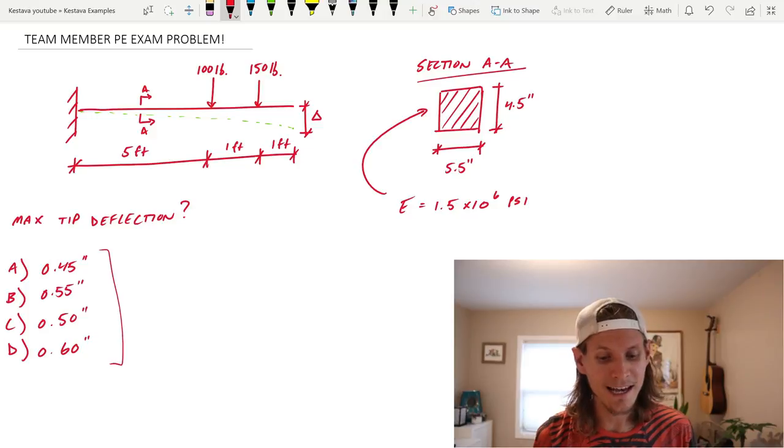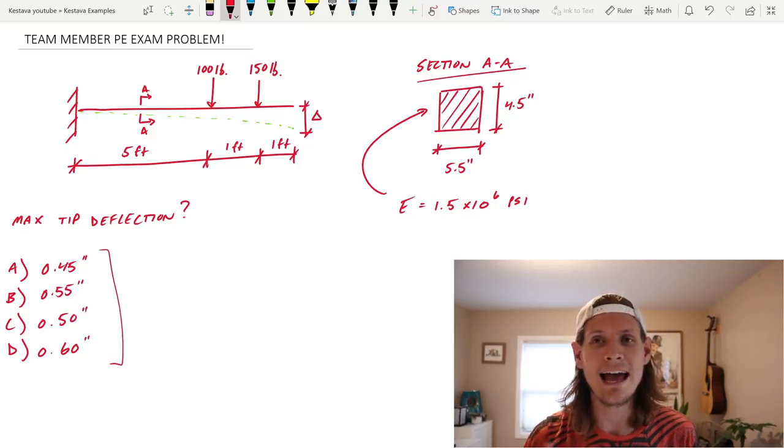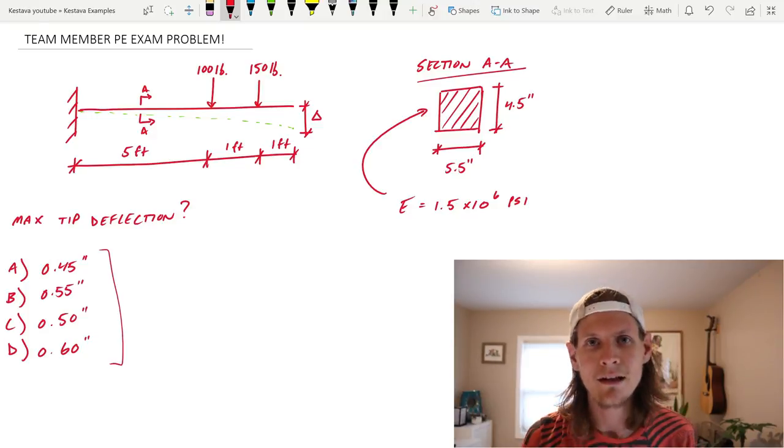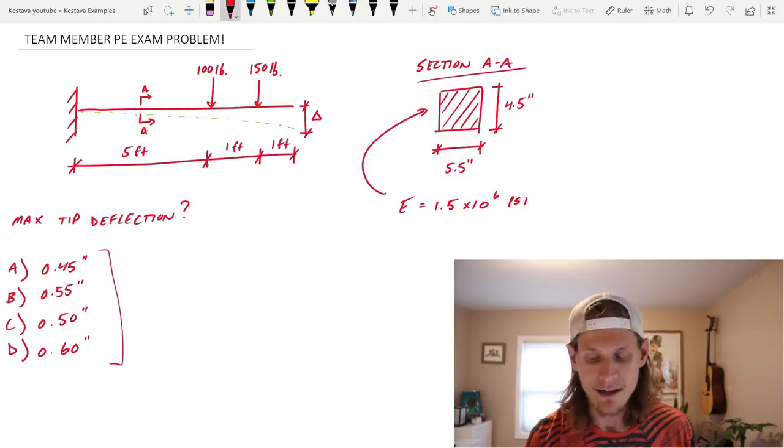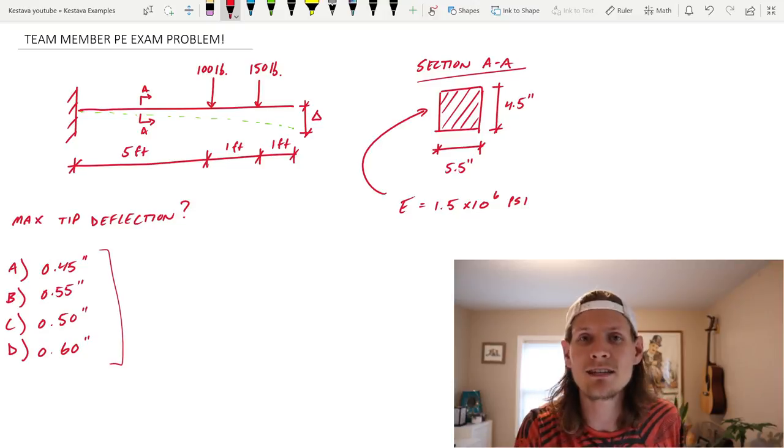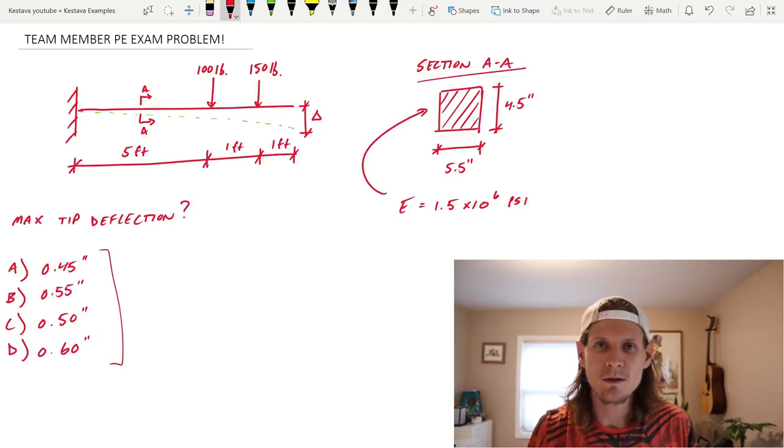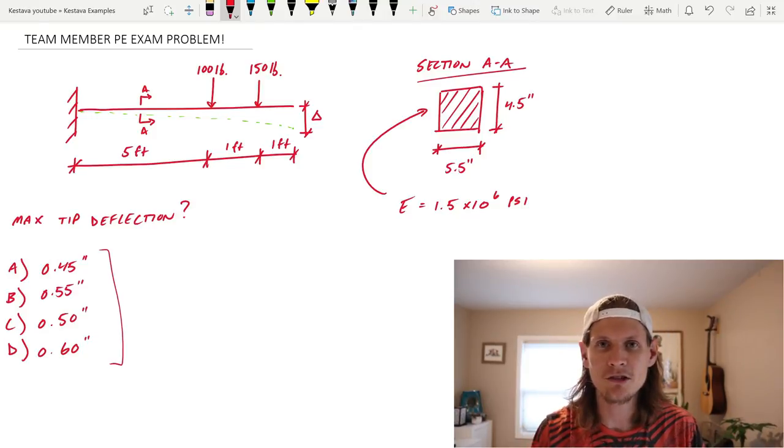And as you will see at the very top, we have a condition called cantilevered beam with a concentrated load at any point. That sounds a lot like this example. The only caveat is that there's two point loads on this beam. So that's not indicative to the example that's in the book. What you can do with deflection is you can just treat each load in its own condition. And then you just add the two deflections that you calculated together. And that is then the sum of your total deflection at the end.